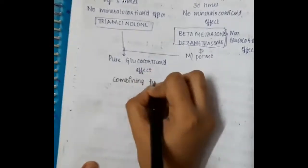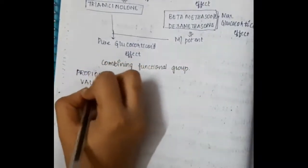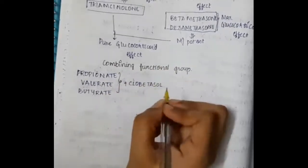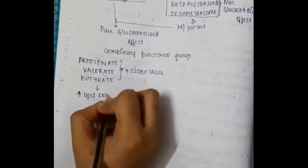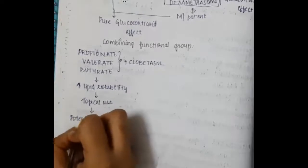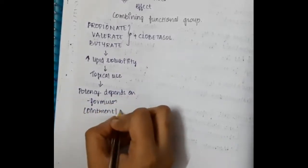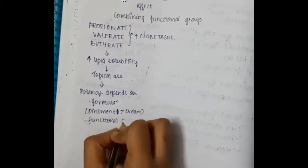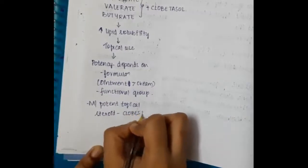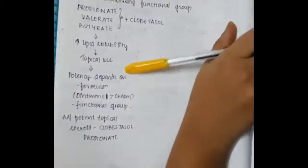Combining functional groups such as propionate, valerate, and butyrate with clobetasol increases lipid solubility, making these drugs suitable for topical use. The potency depends on the formulation — ointment is more potent than cream. The most potent topical steroid is clobetasol propionate.